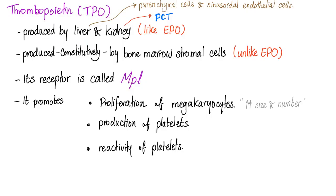Thrombopoietin, or T-Po, is produced by the liver and kidney — like EPO. Where exactly in the liver? Parenchymal cells and sinusoidal endothelial cells. Where exactly in the kidney? The proximal convoluted tubule. It is also produced constitutively by the bone marrow stromal cells, unlike EPO. So EPO is produced by the liver and kidney; T-Po is produced by the liver, kidney, and bone marrow stromal cells.